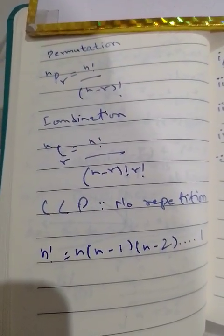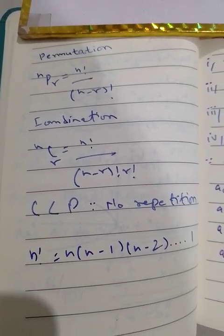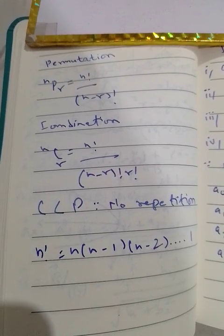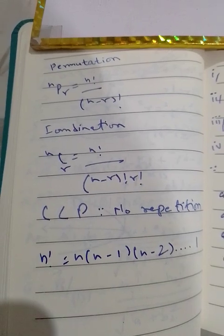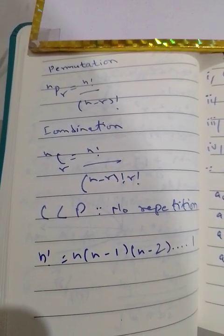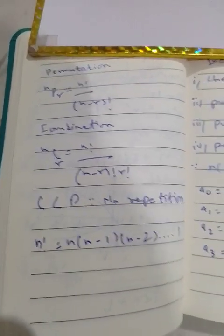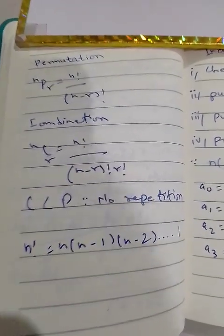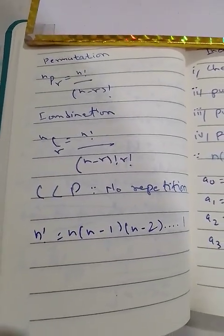Permutations and combinations involve factorials, which is multiplication of a number in reducing order up to one. The formula for permutation is nPr, which means n factorial divided by n minus r factorial. For combination, it is nCr, which is n factorial divided by n minus r factorial times r factorial. Combination is always less than permutation because there is no repetition.